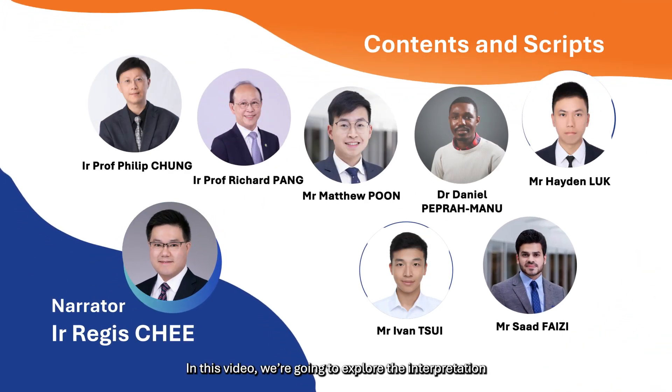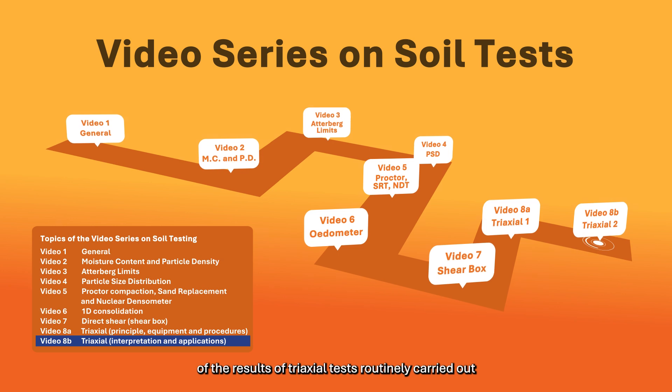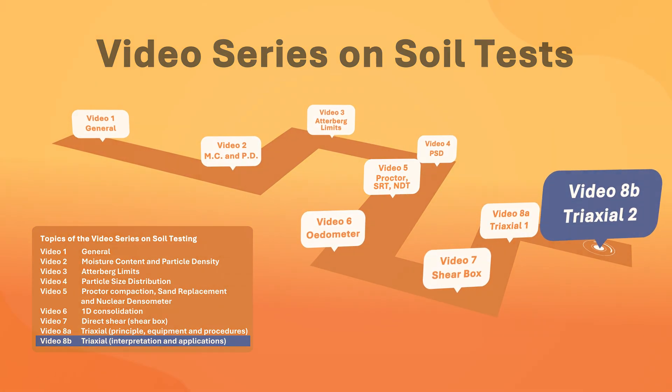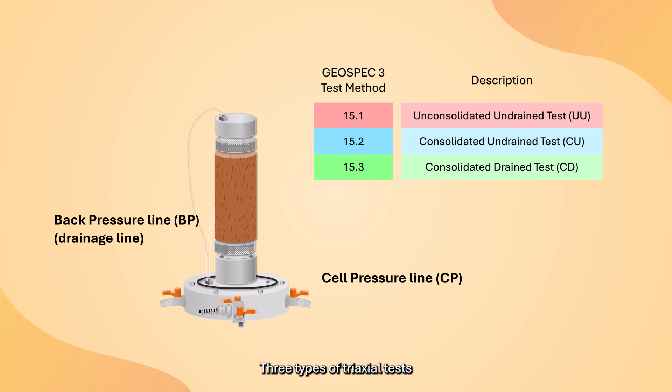In this video, we are going to explore the interpretation of the results of triaxial test routinely carried out. Three types of triaxial tests are covered in GeoSpec 3, namely the Unconsolidated Undrained UU test, Consolidated Undrained CU test, and Consolidated Drained CD test.